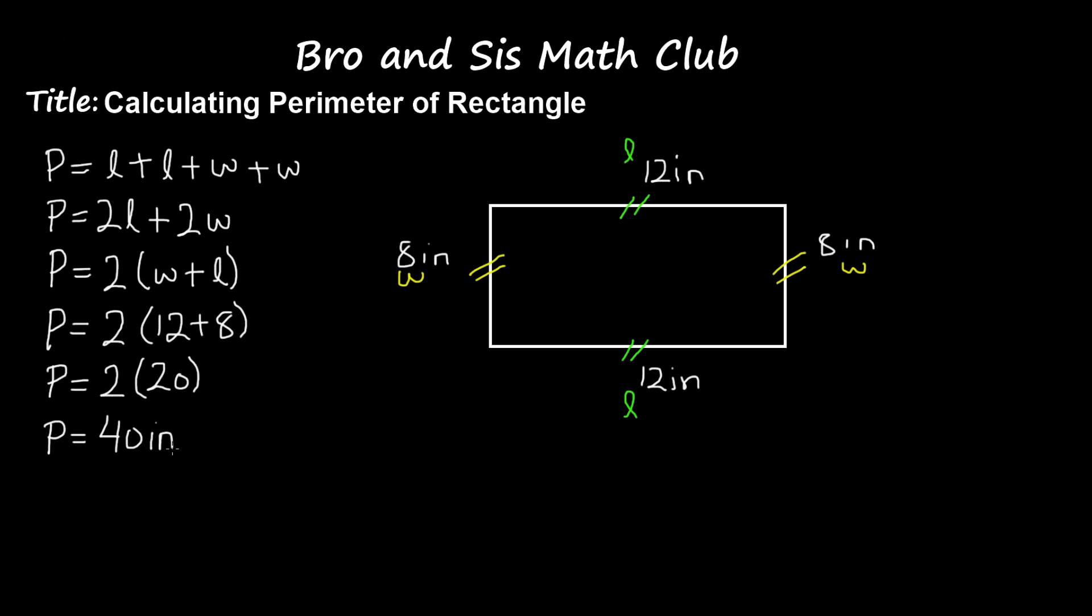Now what we need to do is multiply 2 times 20, which is going to give us 40, and it's 40 inches. So the perimeter of this rectangle is 40 inches.